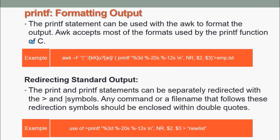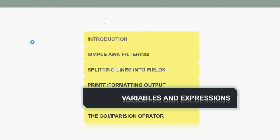Next topic is redirecting standard output. The print and printf statements can be separately redirected with the greater than and pipe symbols. Any command or filename that follows these redirection symbols should be enclosed within double quotes. Let us see one example using the > symbol, which will print the same as we have seen in the above example.